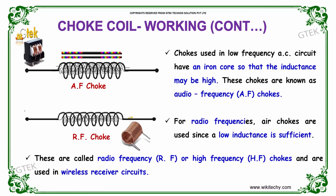Chokes used in low frequency AC circuits have an iron core so that the inductance may be large. These chokes are known as audio frequency chokes. Whereas for radio frequency AC circuits, chokes without an iron core are used since low inductance is sufficient. These are called radio frequency chokes or high frequency chokes, and they are used in wireless receiver networks.